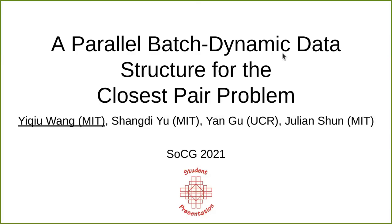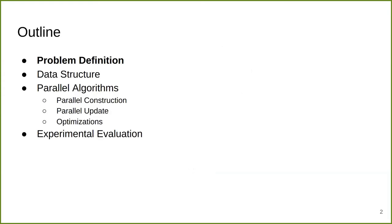Hi. This talk is about a fast parallel batch dynamic data structure for the closest pair problem. My name is Yi-Chiu. This is work done at MIT with Shang-Di, Yan, and Julian. The outline of the talk is: first, problem definition; then data structure; after that, our parallel algorithms; and in the end, experimental evaluations.